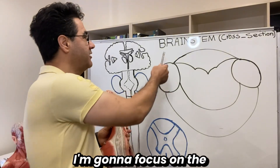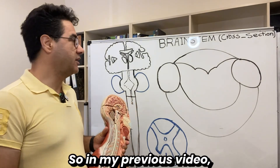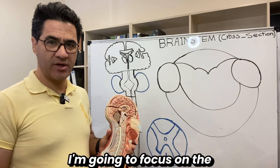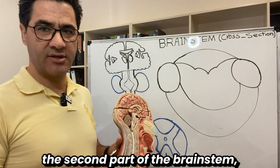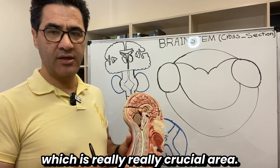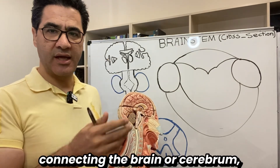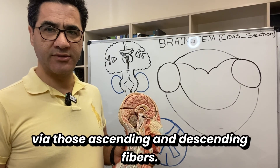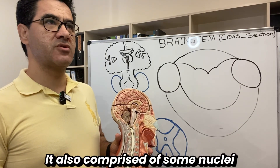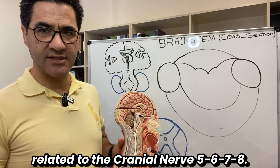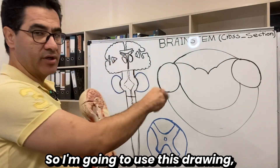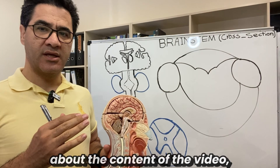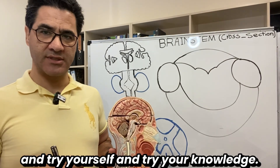Hi everybody. As you see here, I'm going to focus on the brainstem cross-section. In my previous video I showed you some cross-sections at the level of the medulla oblongata. In this video I'm going to focus on the cross-sections of the pons, the second part of the brainstem. At the end of the video you can find a question about the content to test your knowledge.